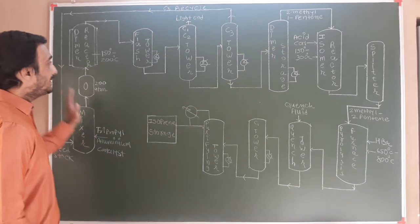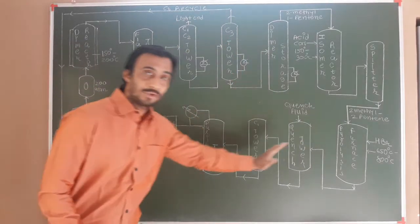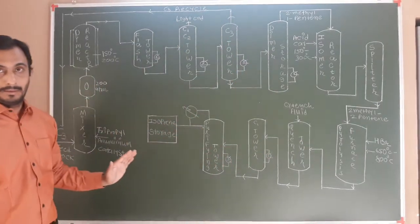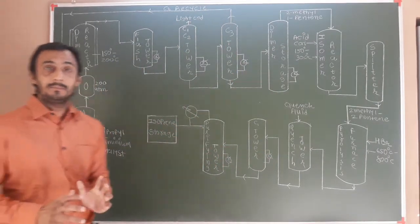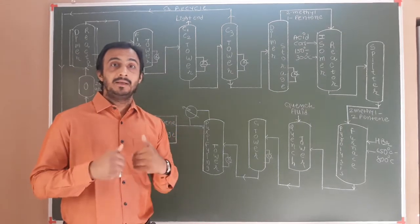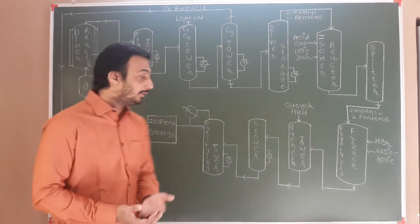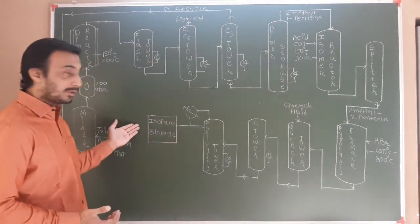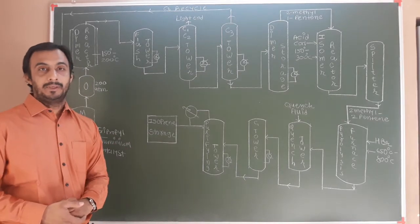This is the flow sheet of the industrial manufacturing process of isoprene.